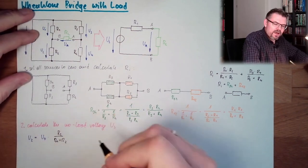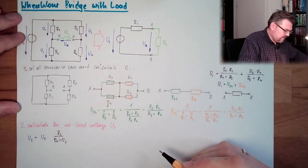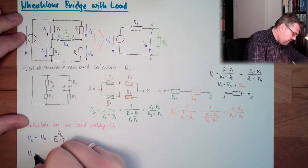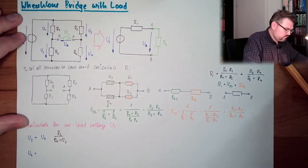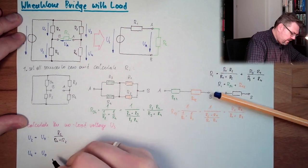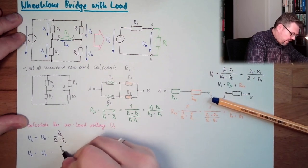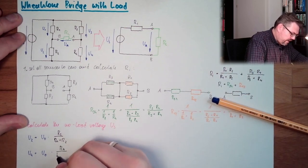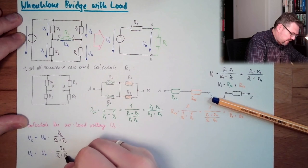Now let's calculate the no-load voltage divider. I said it's going to make it easier. And U4 equals U0 as well. So U4 equals U0 multiplied by R4 divided by R3 plus R4.